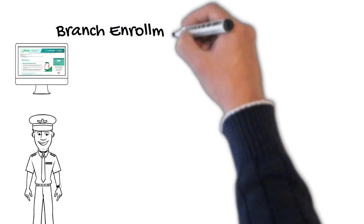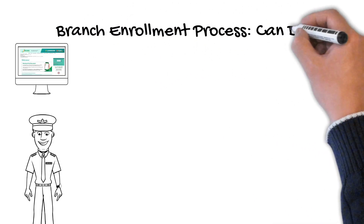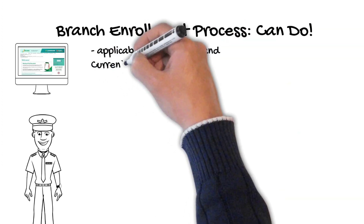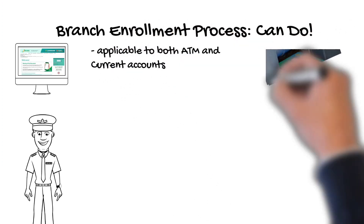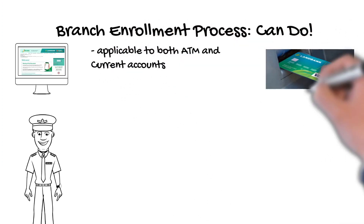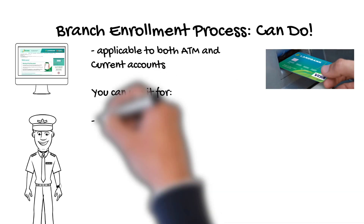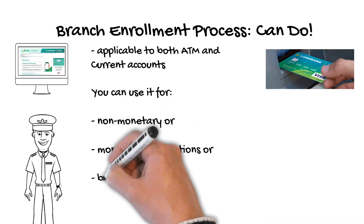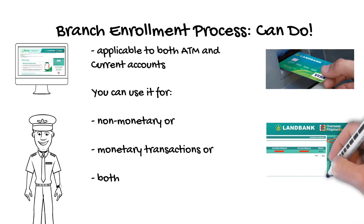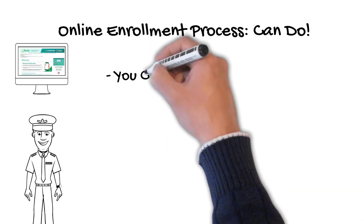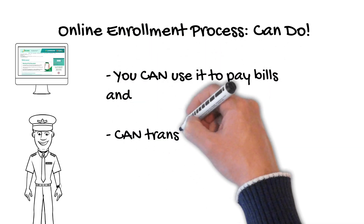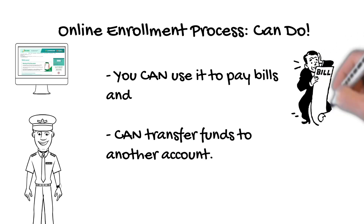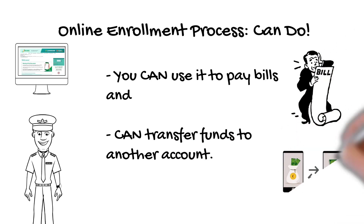Now we will move on to the branch enrollment process. Enrollment through your local LandBank branch is applicable to both ATM and current accounts. Unlike the online application method, you can use it for non-monetary or monetary transactions, or both. It means you can also pay bills and transfer money to other accounts using the LandBank iAccess online banking facility.